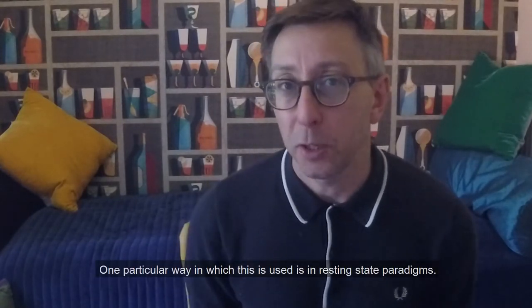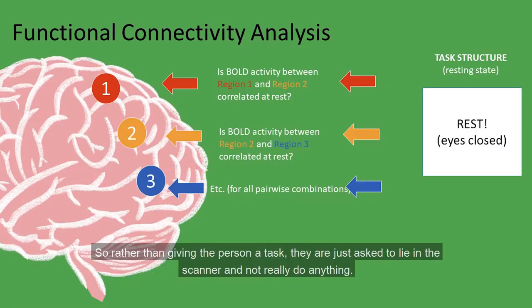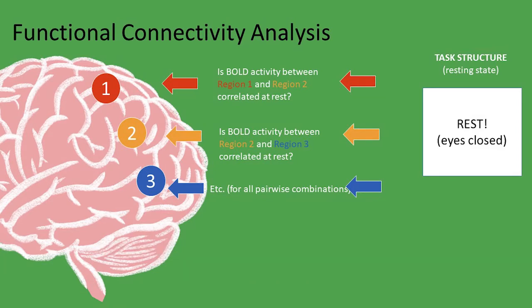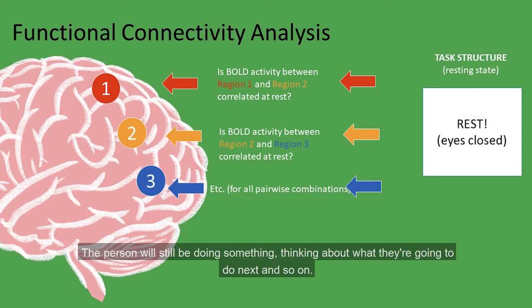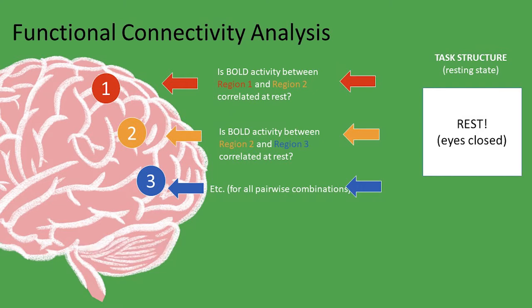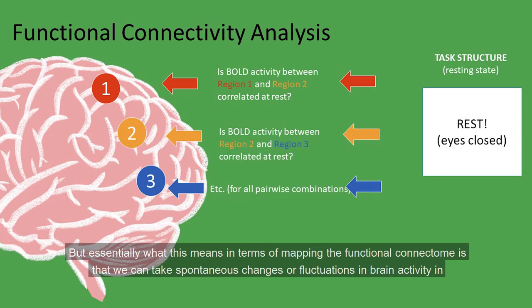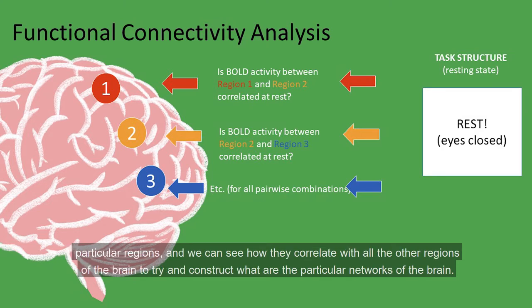One particular way this is used is in resting state paradigms. Rather than giving a person a task, they're asked to lie in the scanner and not really do anything. It's not clear what rest means in cognitive terms — the person will still be thinking thoughts, what they're going to do next and so on. But essentially, mapping the functional connectome in this way means we take spontaneous fluctuations in brain activity in particular regions and see how they correlate with all other regions, to try and construct what the particular networks of the brain are.